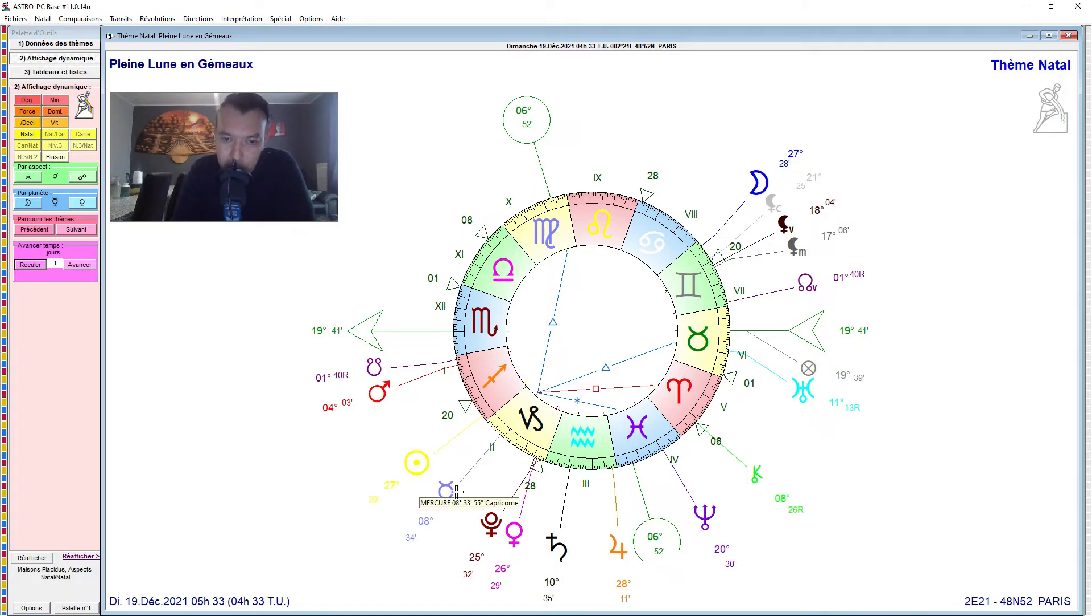Alors, justement, par rapport à ce Mercure, on voit qu'il y a un très beau grand Trigone de Terre. Je l'ai pas mis totalement parce que les aspects, là, voilà, bon, faut savoir qu'il y a Mercure, Trigone Uranus en Taureau, et Trigone le milieu du ciel. Donc, en même temps, ça peut donner, là, pour les 15 jours à venir, jusqu'au 3 janvier, je crois, date de la prochaine nouvelle lune, il y a beaucoup d'idées pragmatiques, originales aussi, qui peuvent être développées.